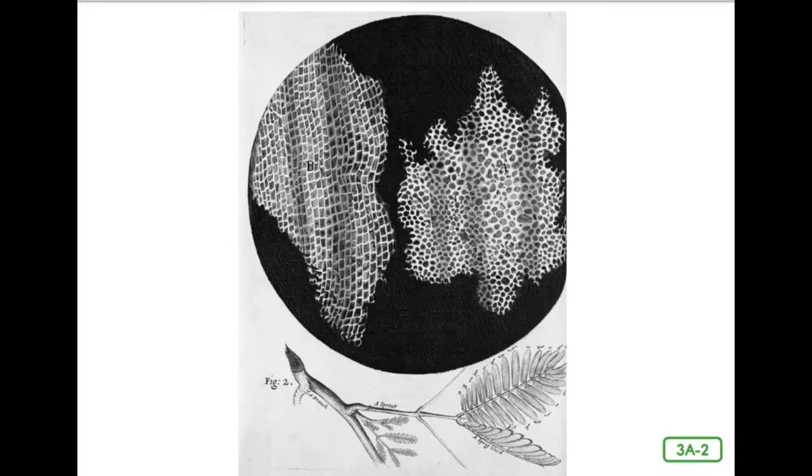All living things, no matter how big or how small, are made up of microscopic units called cells. Cells are the body's building blocks, the smallest units of life that can carry out the functions of a living thing.